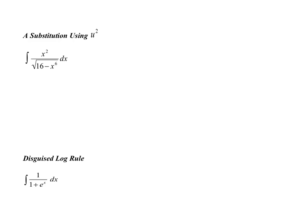So we're going to talk about a substitution using u squared — that's a u-squared substitution, which is a bit unusual. And then also a disguised log rule — somehow it's a log rule in disguise. That's really telling us that the anti-derivative is going to involve a log, but the numerator is definitely not the derivative of the denominator. So how could that possibly be? We will see.